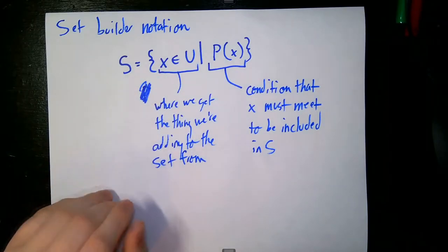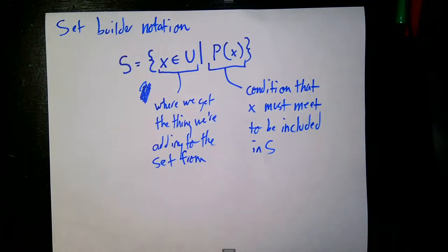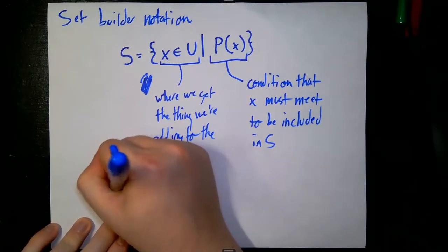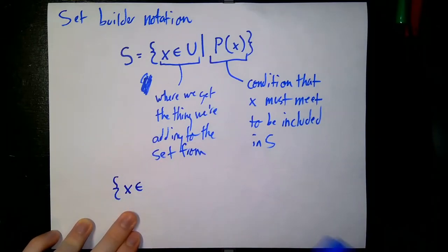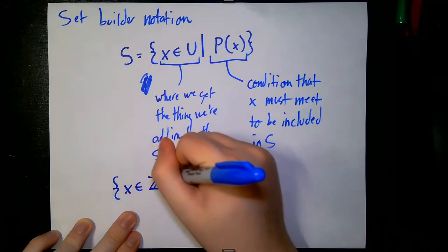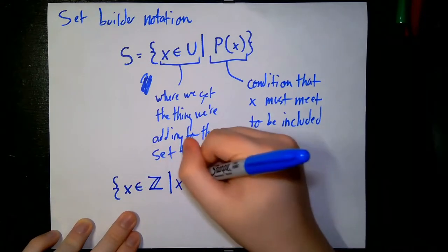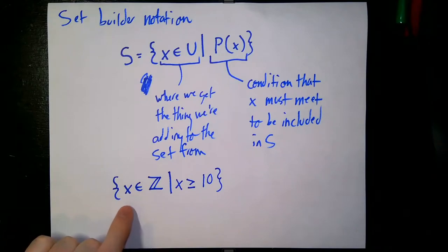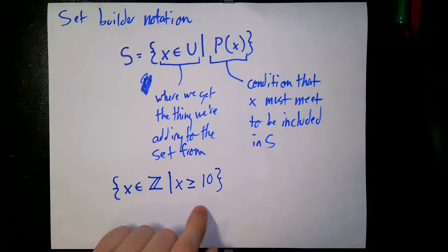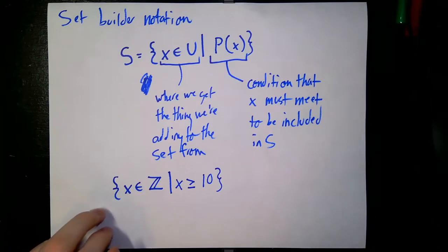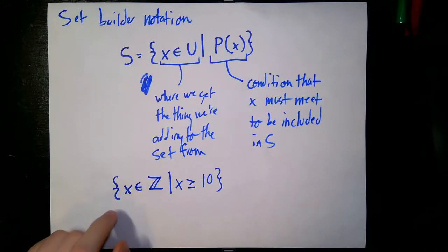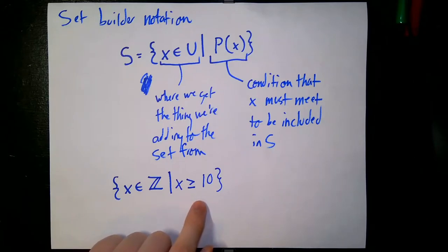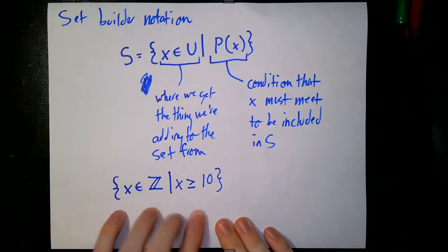For example, the set of all integers greater than or equal to 10 in set builder notation would be: x in the integers such that x is greater than or equal to 10. This takes every single integer that is greater than or equal to 10 and puts it into one set. We read this as: x in the integers, such that x is greater than or equal to 10, and this is the set containing all those integers that satisfy this predicate.